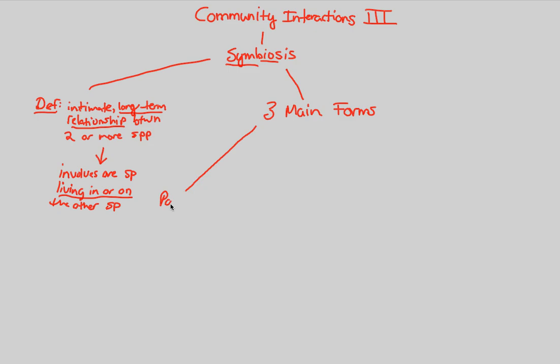We have one form known as parasitism, something you've probably heard of before. Parasitism is a plus-minus relationship, a plus-minus interaction between members of a community. There's also mutualism, and because it's mutual, it's going to be a plus-plus interaction between two species. Finally, there's commensalism, one final form of community interaction that involves symbiosis. In commensalism, we actually have what is known as a plus-zero relationship and interaction between the species.